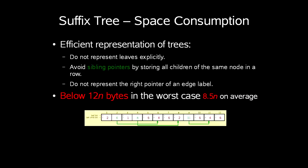To reduce this cost we need some ideas for a more efficient way of representing this. So what we do is to say that we do not represent leaves explicitly. Instead we would just set a leaf bit. We avoid sibling pointers by storing all children of the same node in a row. And we do not represent the right pointer of an edge label. Instead we just use a last child bit. In practice this would give us somewhere between 10 and 40 bytes per letter in x.